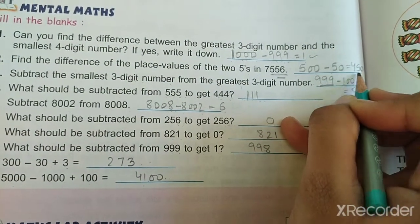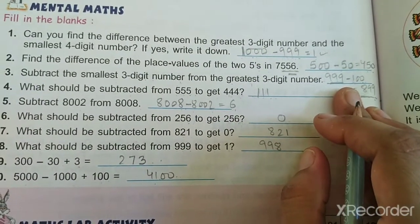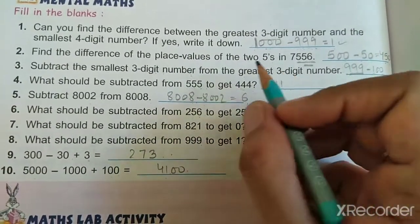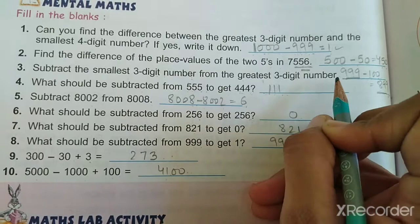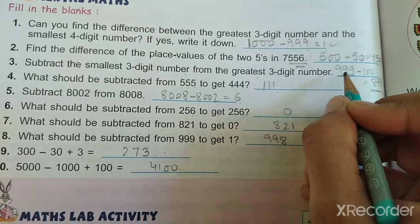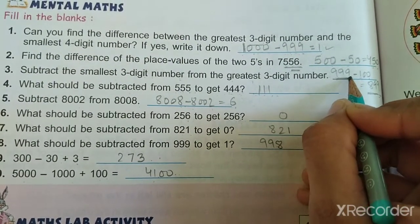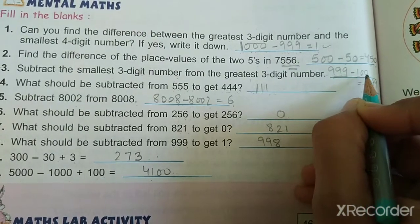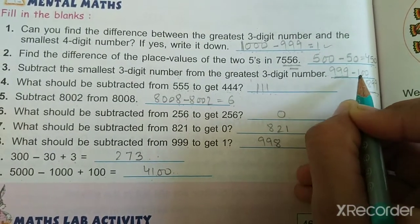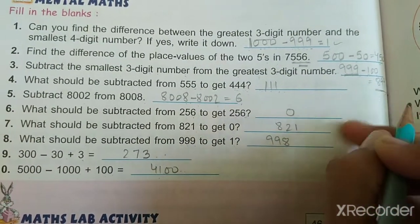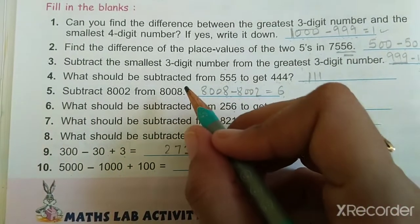Subtract the smallest three-digit number from the greatest three-digit number. The greatest three-digit number is 999 and the smallest three-digit number is 100. So 999 minus 100 is 899.